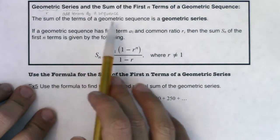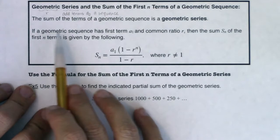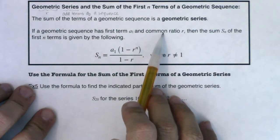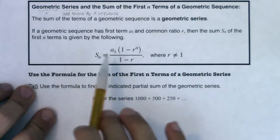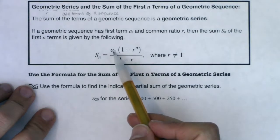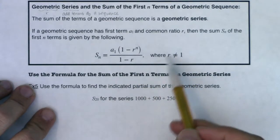So the sum of the terms of a geometric sequence is a geometric series. If a geometric series has first term a sub 1 and a common ratio r, then the sum s of n of the first n terms is given by the following. So we'll get s of n is equal to a sub 1 times 1 minus r to the n in ratio to 1 minus r, as long as r isn't 1.